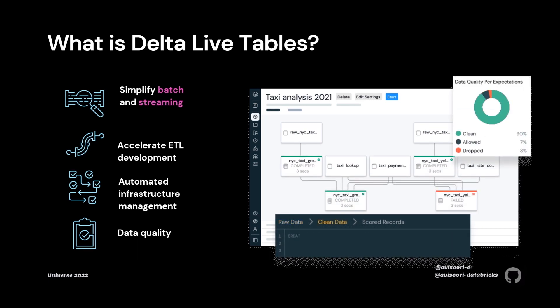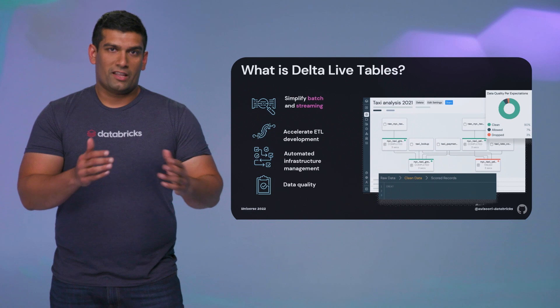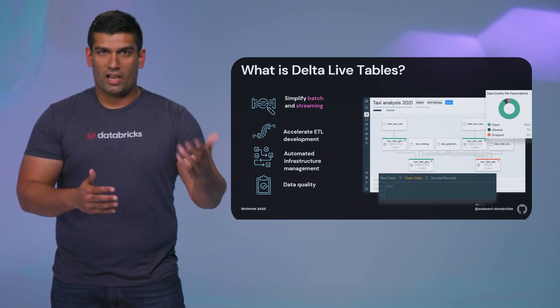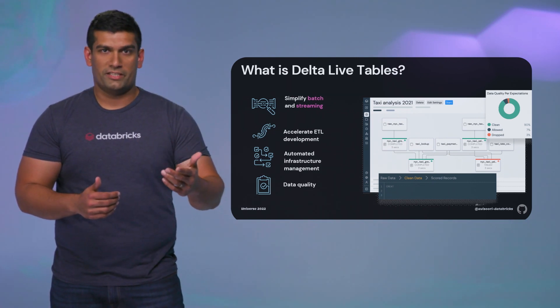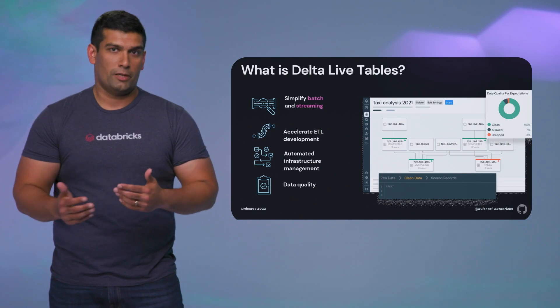One framework that simplifies this process significantly is Delta Live Tables, or DLT. DLT uses a simple, declarative approach to building reliable data pipelines — streaming or batch — whether using Python or SQL. The underlying DLT engine figures out dependencies live, monitors data quality, and automates away literally all the operational complexity. Additionally, you can treat your data as code and apply modern software engineering best practices like testing, error handling, monitoring, and documentation to deploy these pipelines at scale.